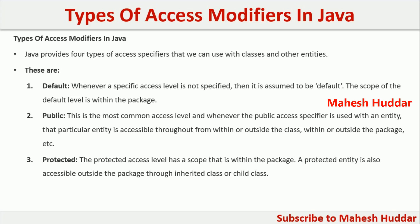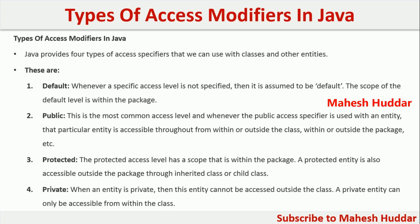The last one is the private access modifier. When an entity is defined with the private access specifier, this entity cannot be accessed outside the class — that is, private data members or methods are accessible only within a class and are not accessible outside the class.